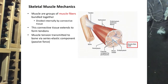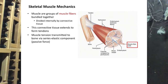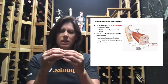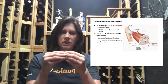Along each section of the muscle there are connective tissues wrapped around them. The skeletal muscle cell or fiber is wrapped by endomysium, the fascicles are wrapped by perimysium, and the entire muscle is wrapped by epimysium. Those connective tissues travel the length of the entire muscle and come together at the end forming the tendon, which attaches to the bone.